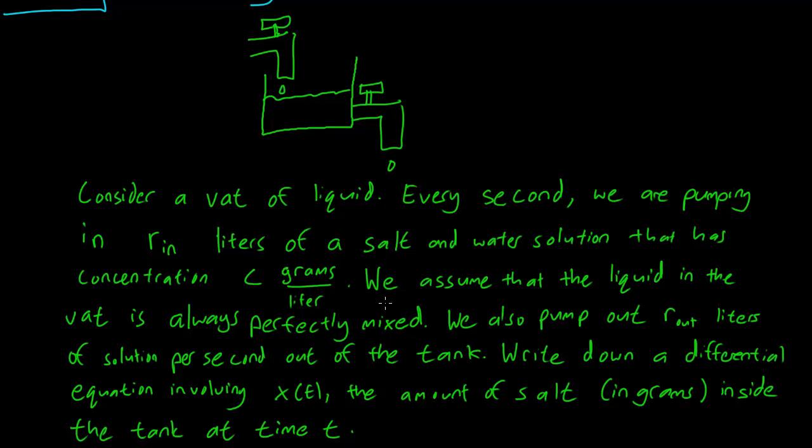We assume that the liquid in the vat is always perfectly mixed. Now in reality we might have the salty water on top and the non-salty water in the bottom but we are not going to worry about that. So every time the liquid hits the vat, it's perfectly mixed. And we pump out R_out liters of solution per second out of the tank.